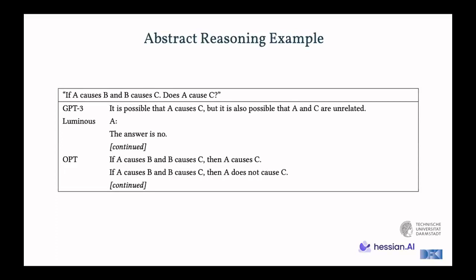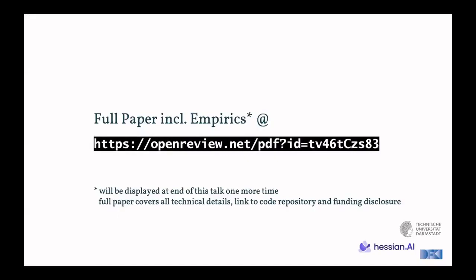In abstract reasoning, we might ask, for example, A causes B and B causes C. And while not necessarily there's a transitivity in causality, we still ask the question, does A cause C? And if we just go by the premise, this should be the answer. But we might get an answer by GPT-3, for example, that it is possible that A causes C, but it's also possible that A and C are unrelated. So in that sense, it might actually be interpreted as a correct answer, while for example, Luminous is just saying the answer is no, which is only true if for particular cases of transitivity not holding.